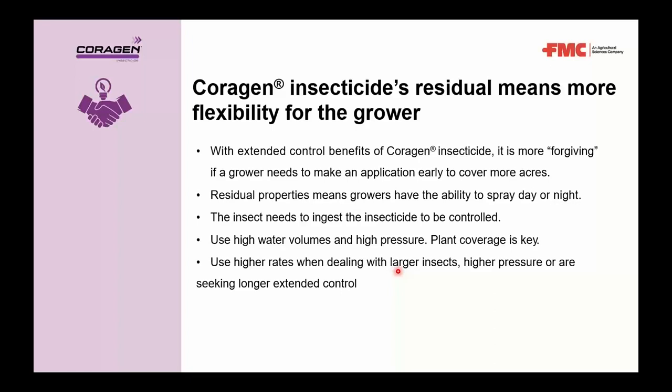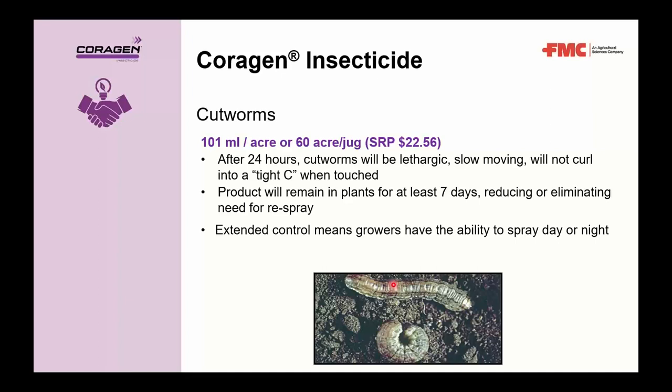Because Corrigan is ingestion-based, aim for good plant coverage with high water volume — 10 gallons per acre — and high pressure to ensure all parts of the plant receive coverage. For pests like armyworm later in the season, the general rule of thumb for rate selection is to use higher rates when dealing with larger insects, higher pressure, or when a longer extended control period is needed.